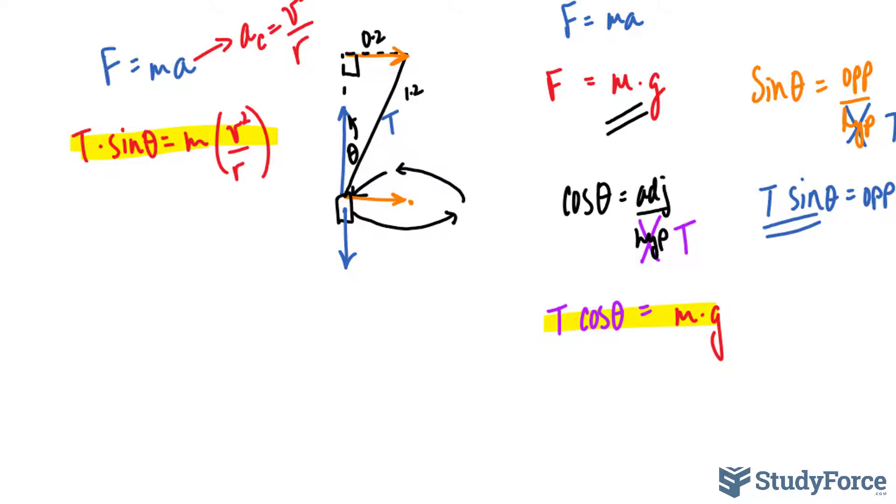Now, in order to solve for velocity, this part, let's use substitution as a method to solve. And what I mean by that is I'll solve for T in this equation. If I do that, I get T is equal to m times v to the power of 2 over r, and at the bottom will be sine theta, because I divided both sides by sine theta. All right?